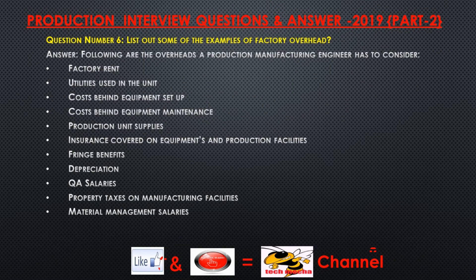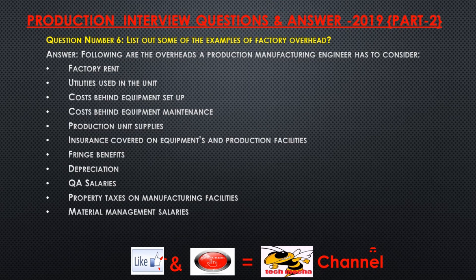Question number six: List out some examples of factory overhead. Answer: The overheads a production or manufacturing engineer has to consider include factory rent, utilities used in the unit, costs behind equipment setup, equipment maintenance, production unit supplies, insurance on equipment and production facilities, fringe benefits, depreciation costs, salaries, property taxes on manufacturing facilities, and material management salaries.